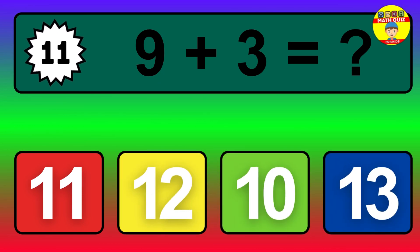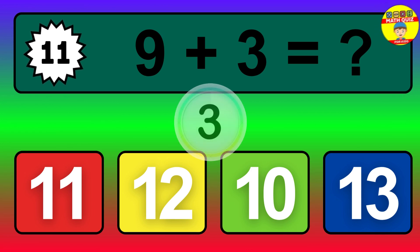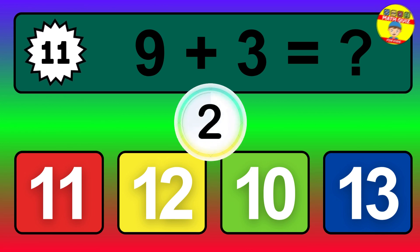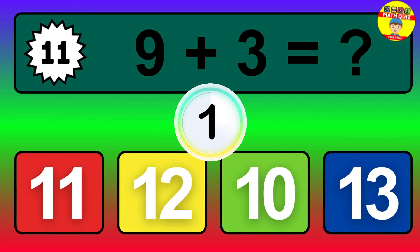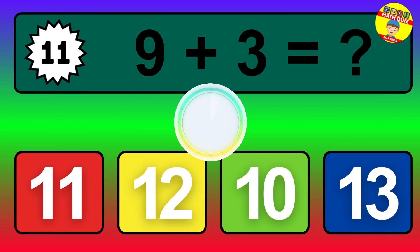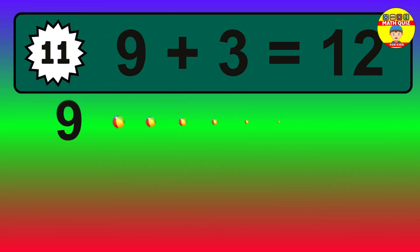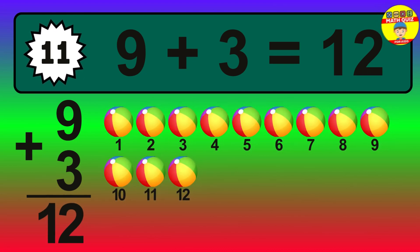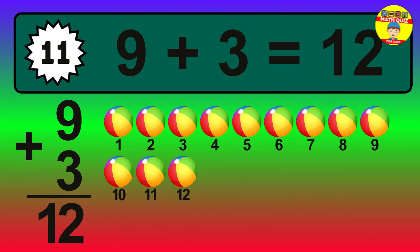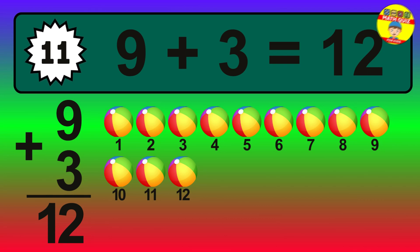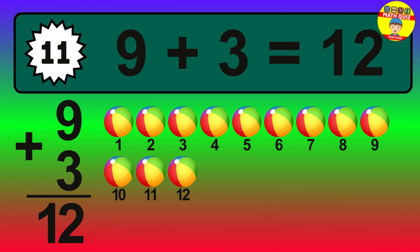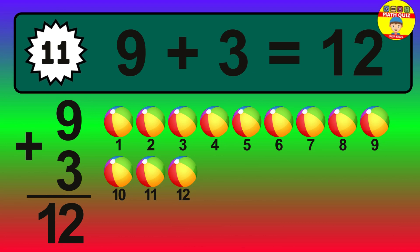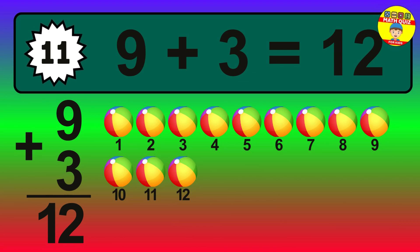Question 11. 9 plus 3 equals what? The answer is 9 plus 3 is 12. Let's count it: 1, 2, 3, 4, 5, 6, 7, 8, 9, 10, 11, 12.